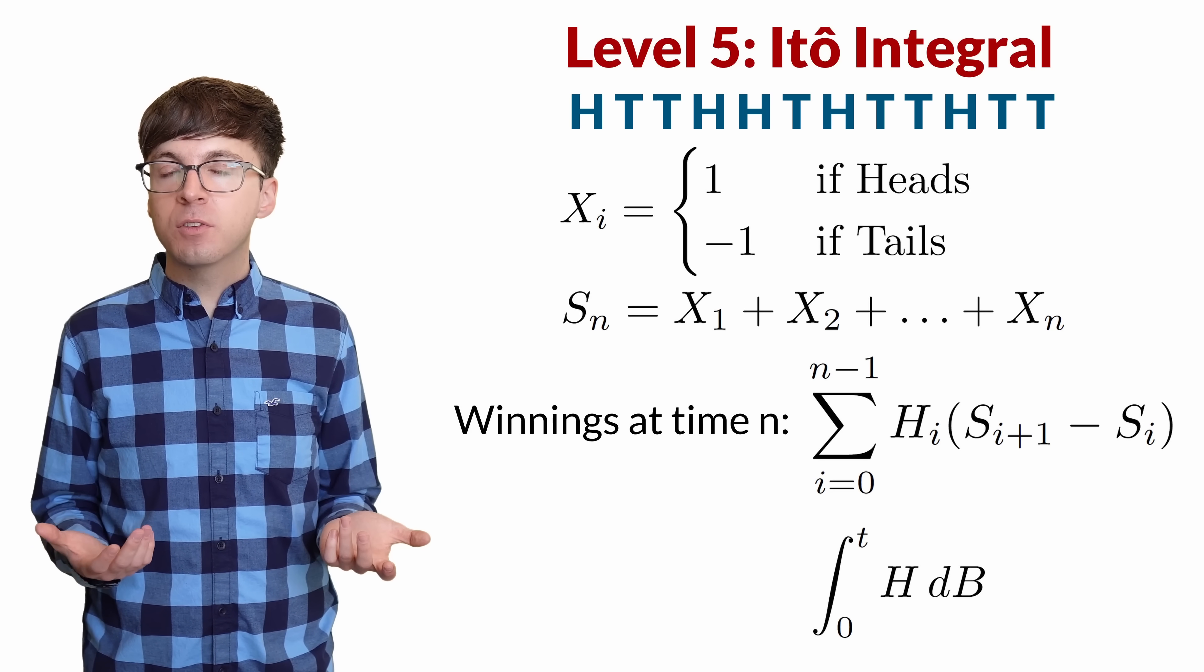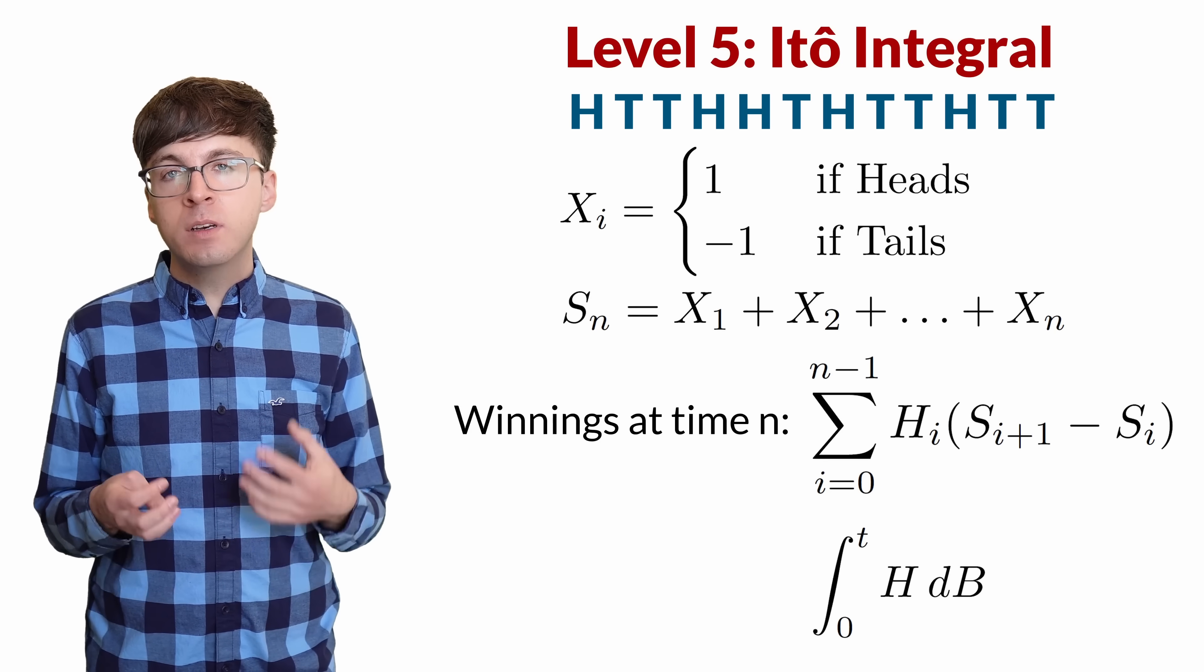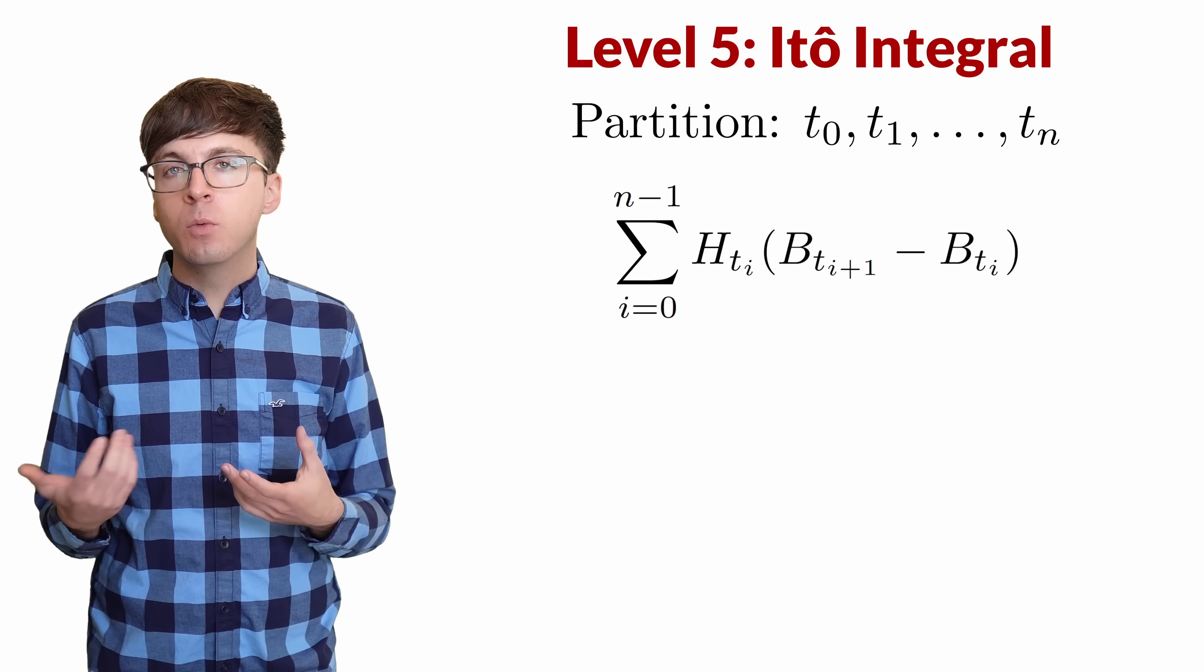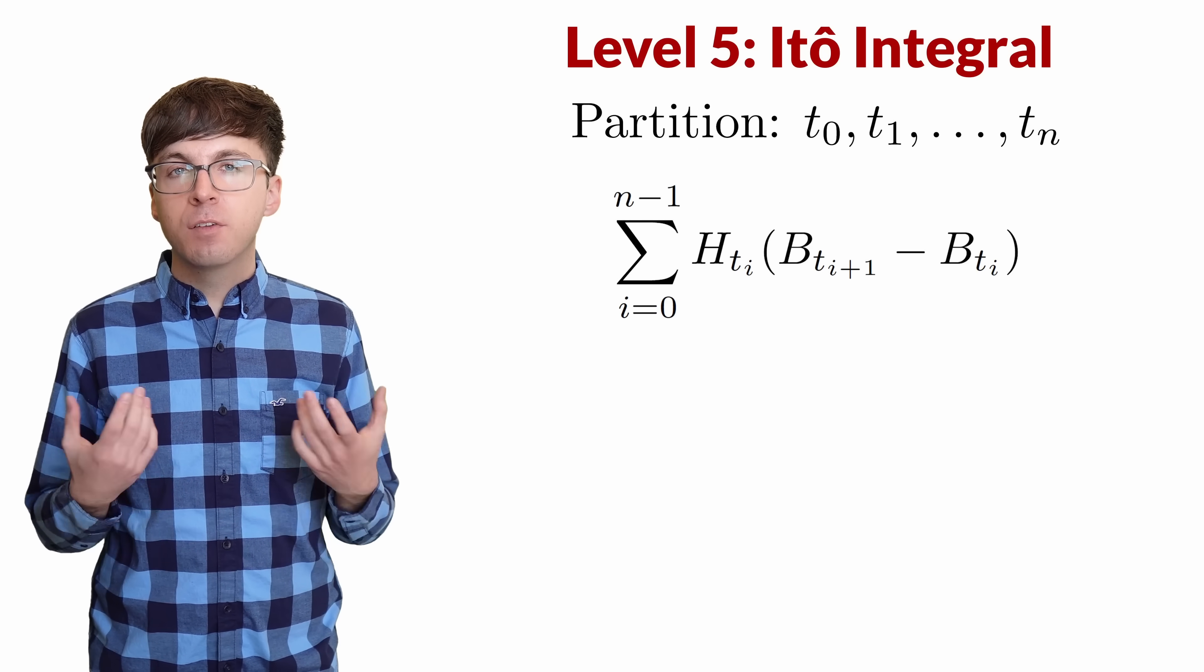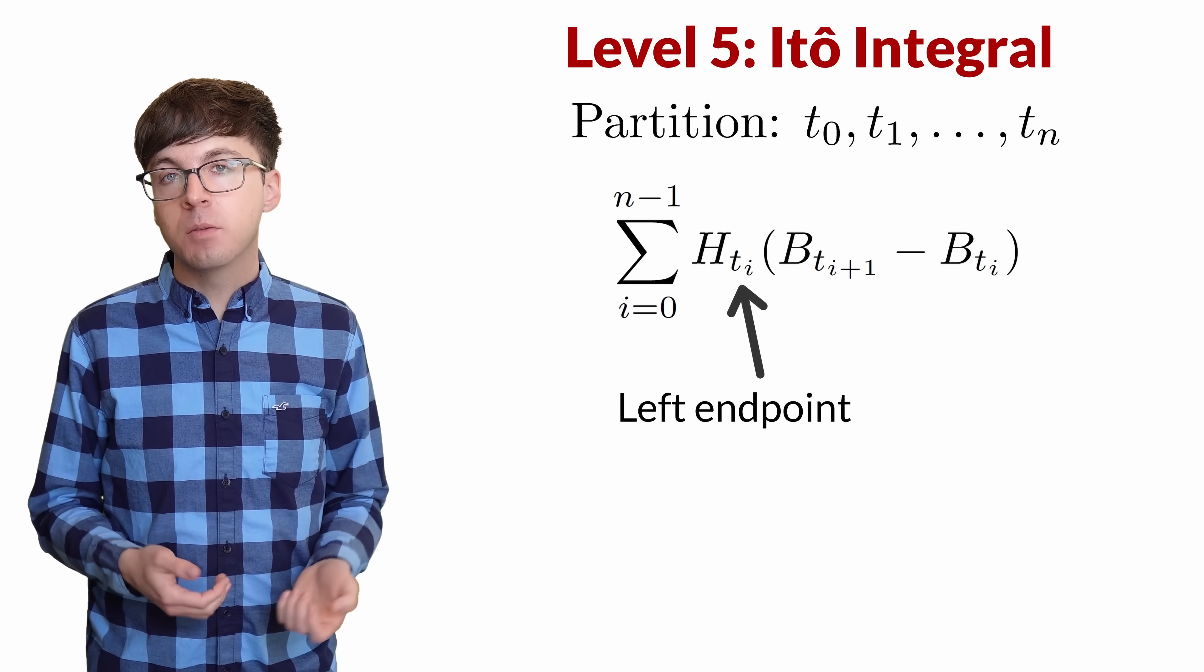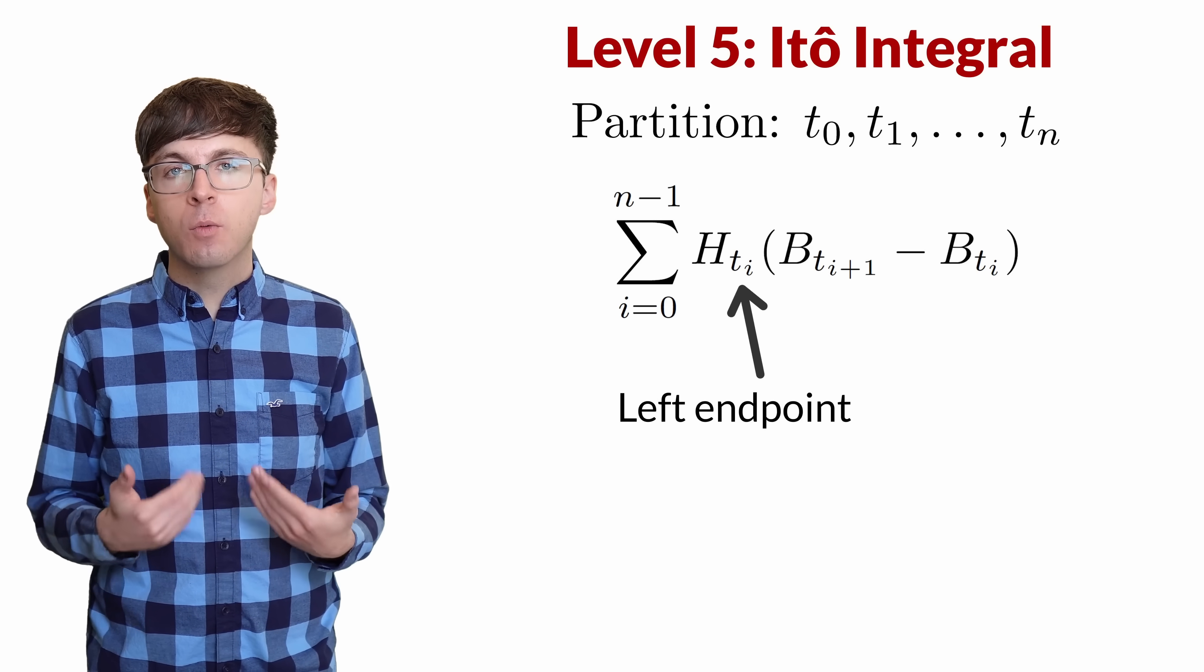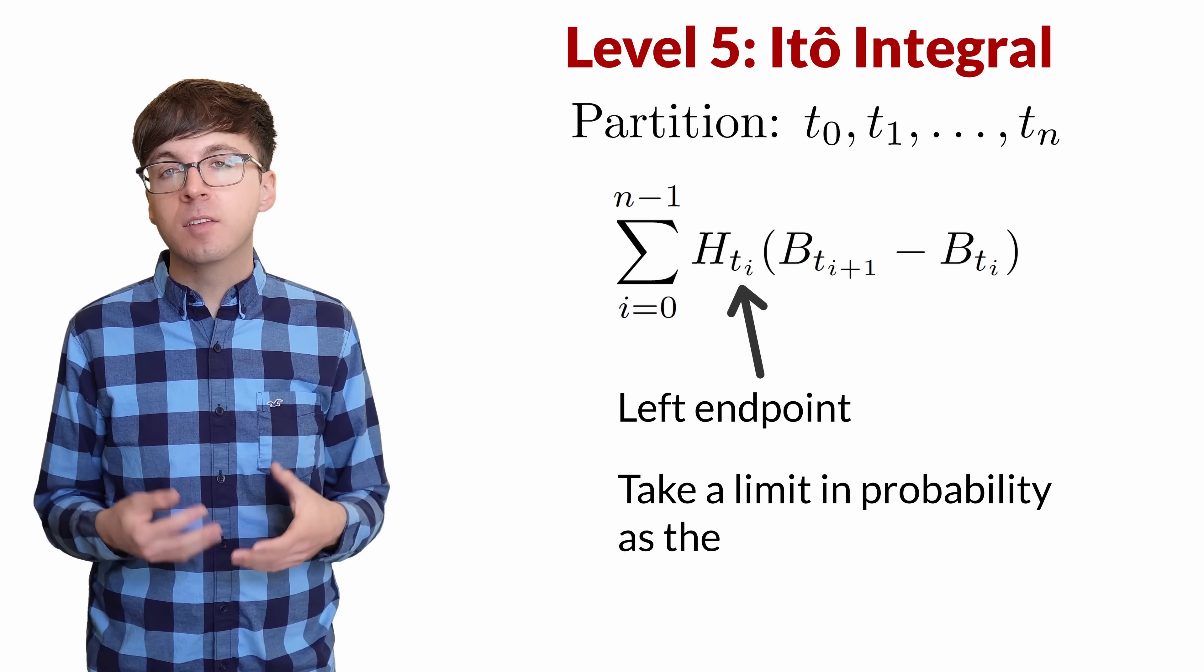None of the integrals we've talked about so far can solve this problem, so we need a new approach. One common choice is the Itô integral. We start with a partition of the interval a,b and find the sums like we did with the Riemann-Stieltjes integral. We're integrating with respect to B, the Brownian motion. For the heights, we use the function h and evaluate it at the left endpoint. This is required for the Itô integral and is related to the idea that we should not be peeking into the future with our betting strategy.